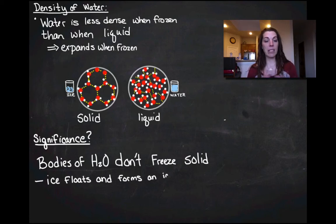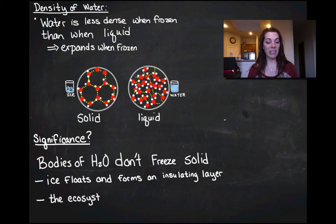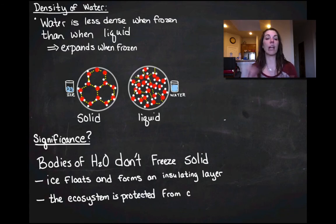Ice floats and because it floats, it's going to form an insulating layer that is going to protect the ecosystem from the colder air.